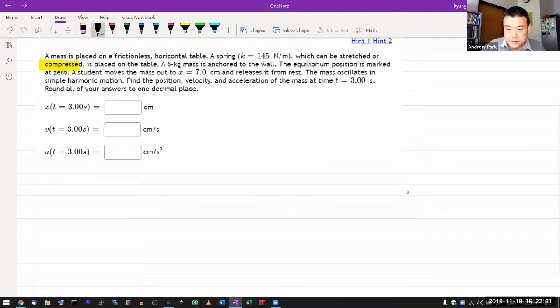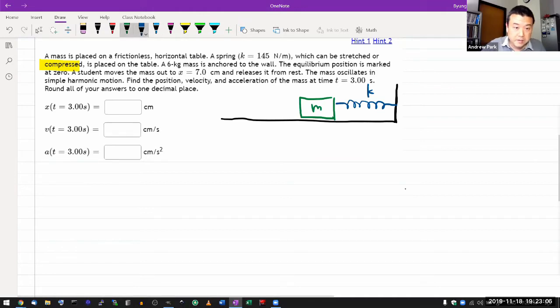Let me start sketching this so I have a mental image. Here's my frictionless table, my immovable wall, and my compressible spring tied to a mass. I'm given the spring constant k. This position is the equilibrium position x equals zero. The student moves the mass out to x equals seven centimeters and releases it from rest. The mass oscillates in simple harmonic motion.